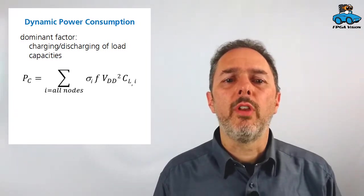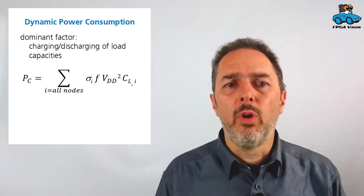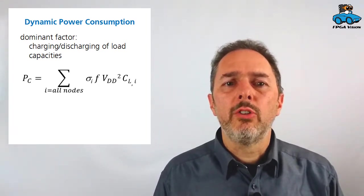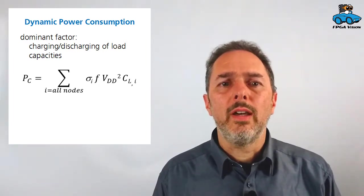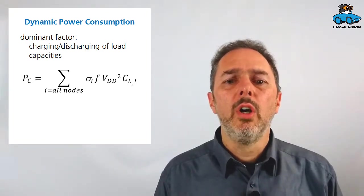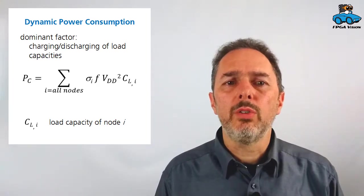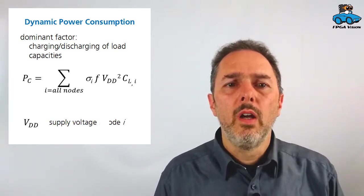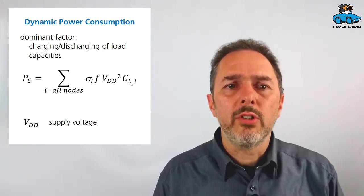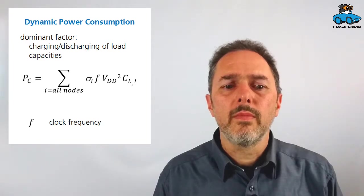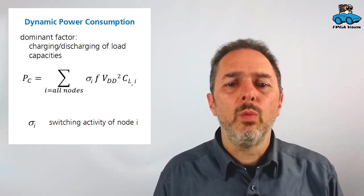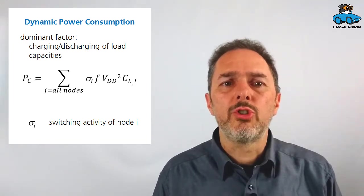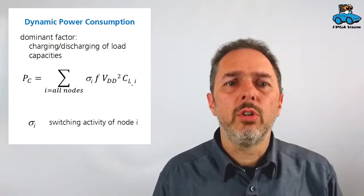So what influences the dynamic power consumption? The dominant factor is the charging and discharging of the load capacities. The cross current is a smaller factor. So let's have a look at the main factor, which is illustrated by this formula. Power consumption is the sum for all circuit nodes. For this sum, we have to consider a number of factors, which is the load capacity of the node (the capacity CL). We have to consider the supply voltage VDD, which has a square factor. We have the clock frequency, so how fast is the switching done. Plus we have sigma, which is the switching activity, the probability of a change of the input signal. So all these contribute to the power consumption.